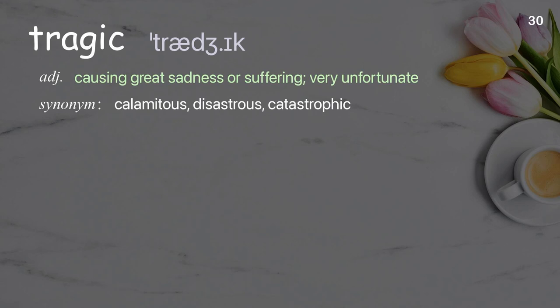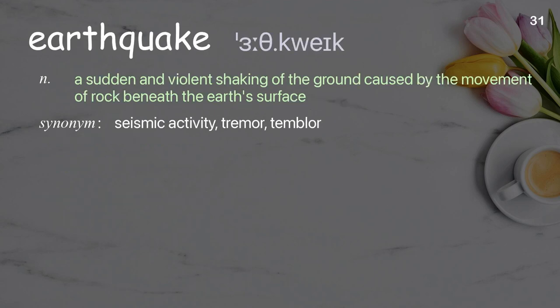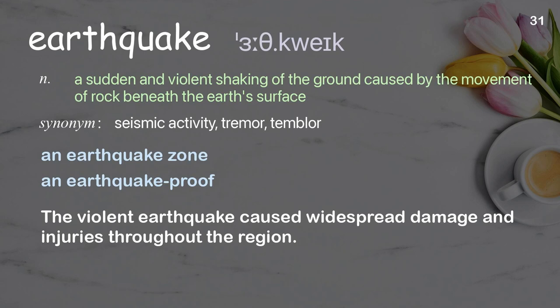Tragic: causing great sadness or suffering; very unfortunate. Earthquake: shaking of the ground caused by the movement of rock beneath the earth's surface. Examples: an earthquake zone, earthquake-proof. The violent earthquake caused widespread damage and injuries throughout the region.